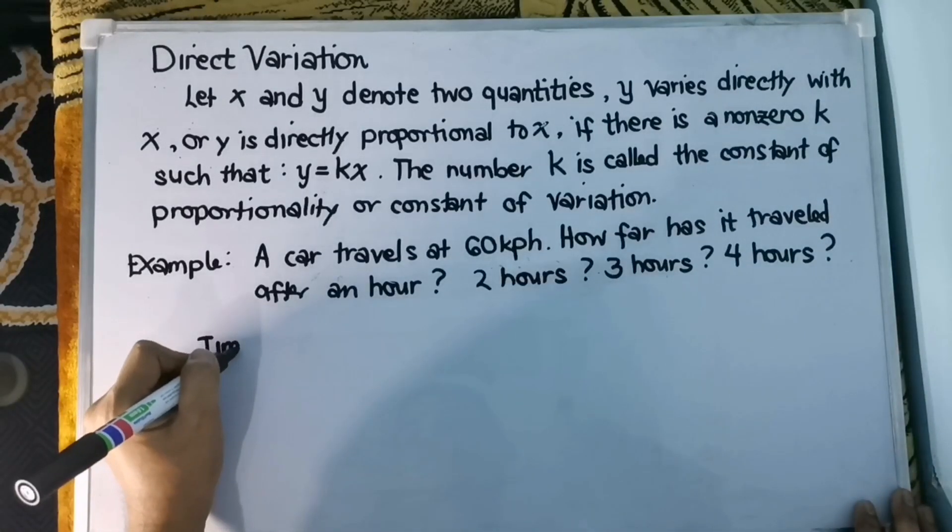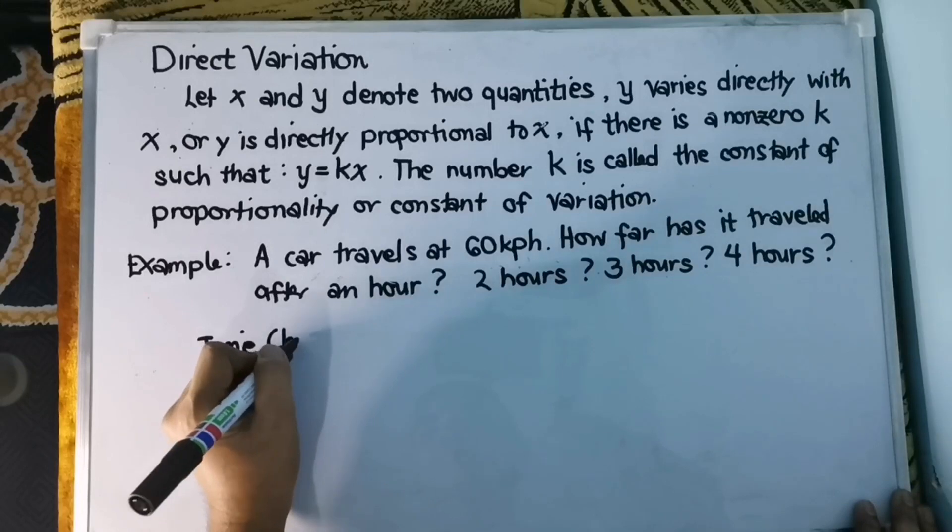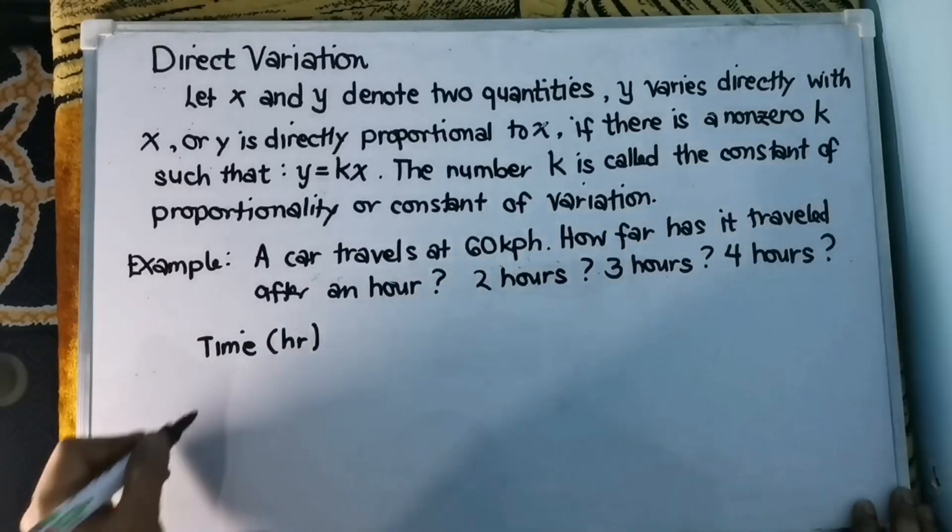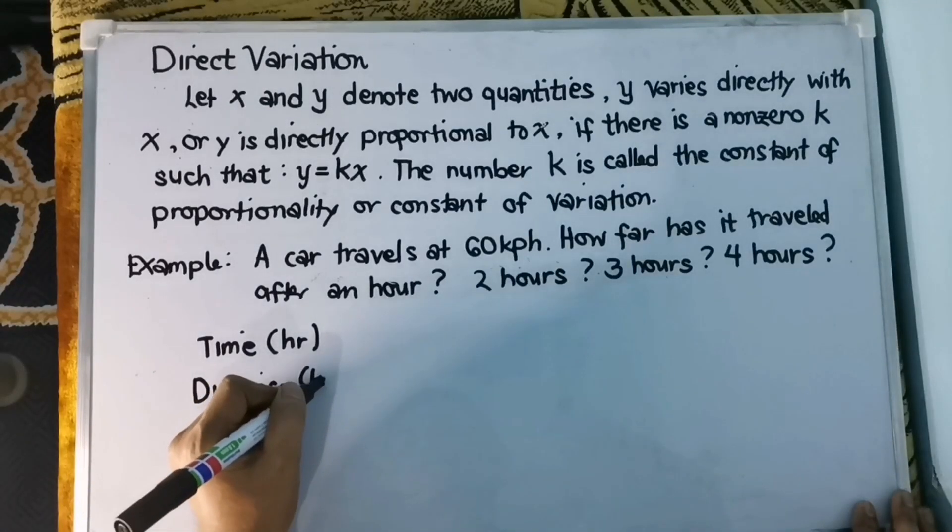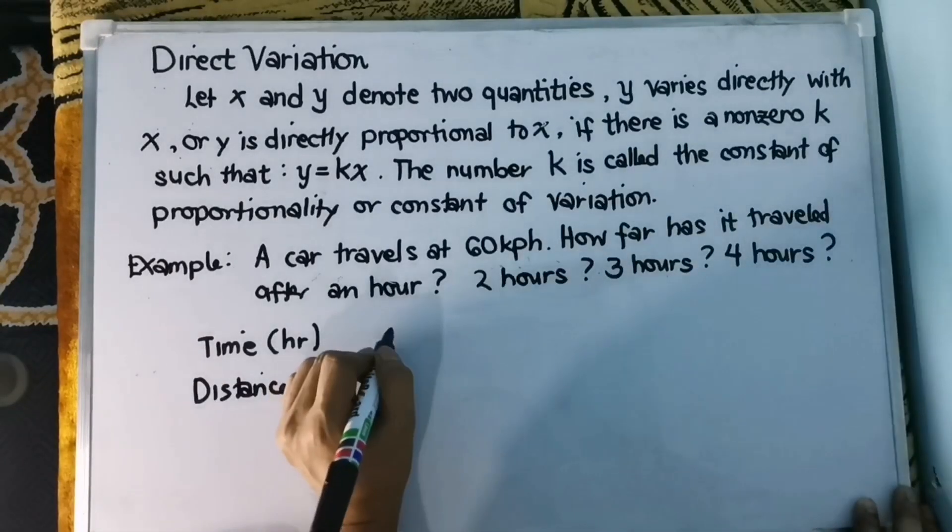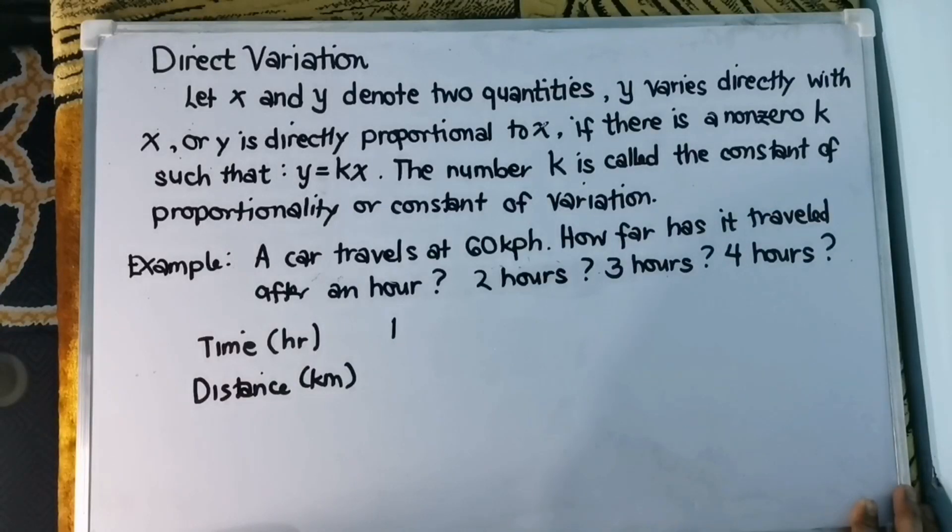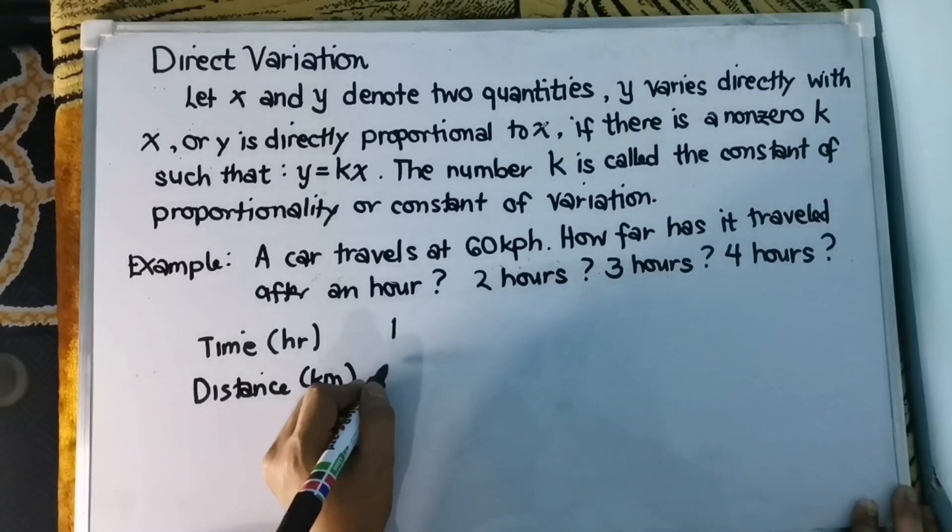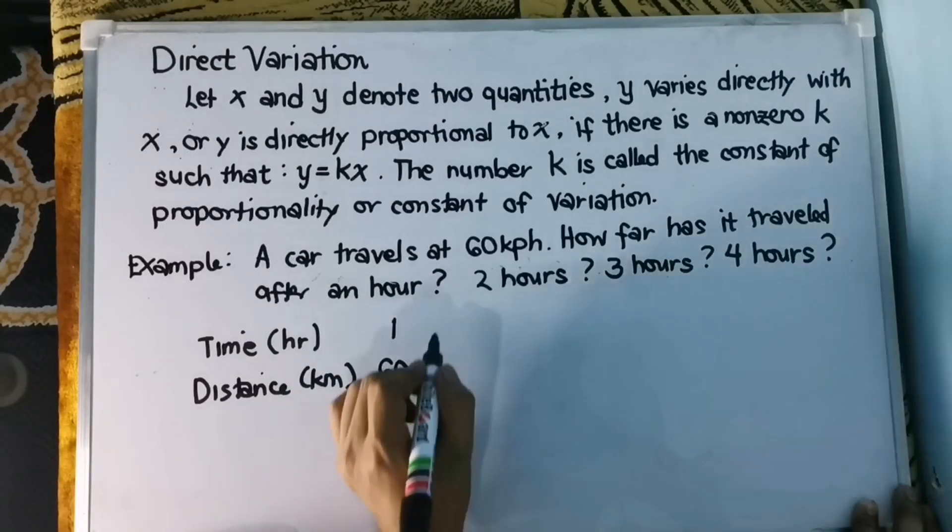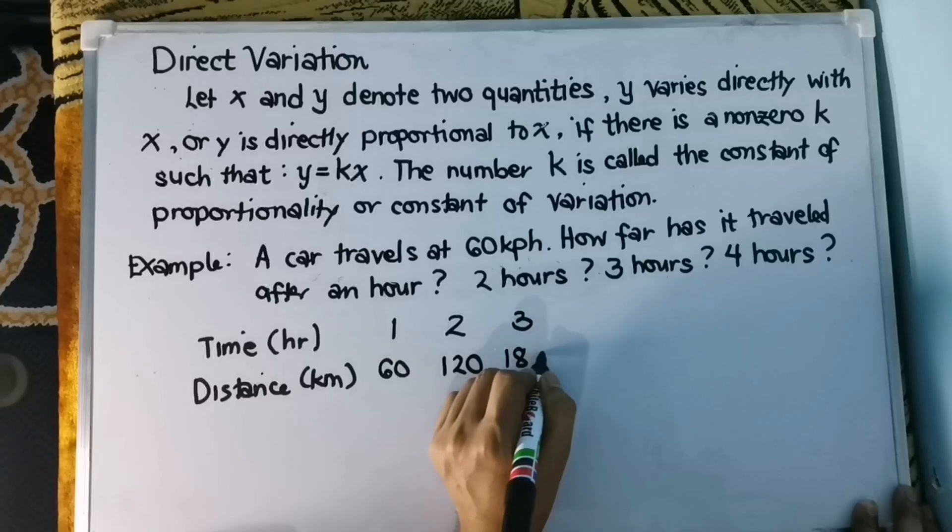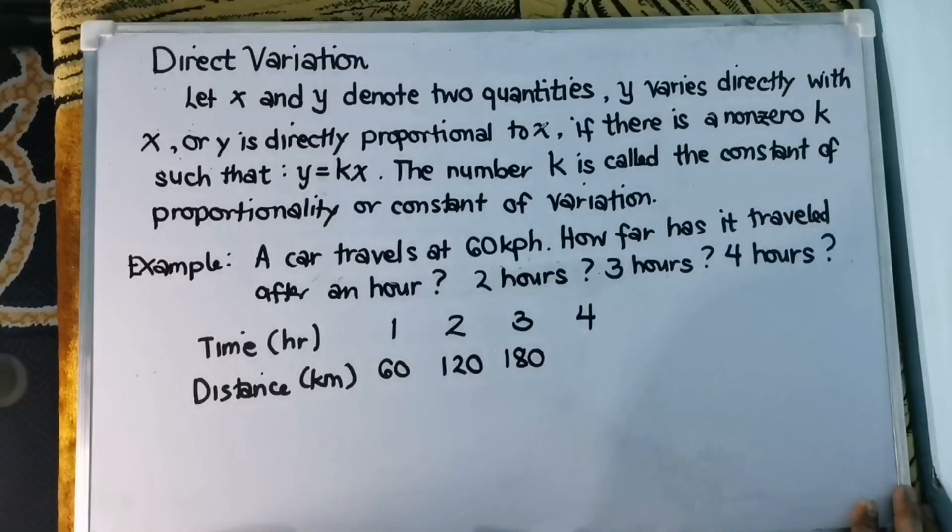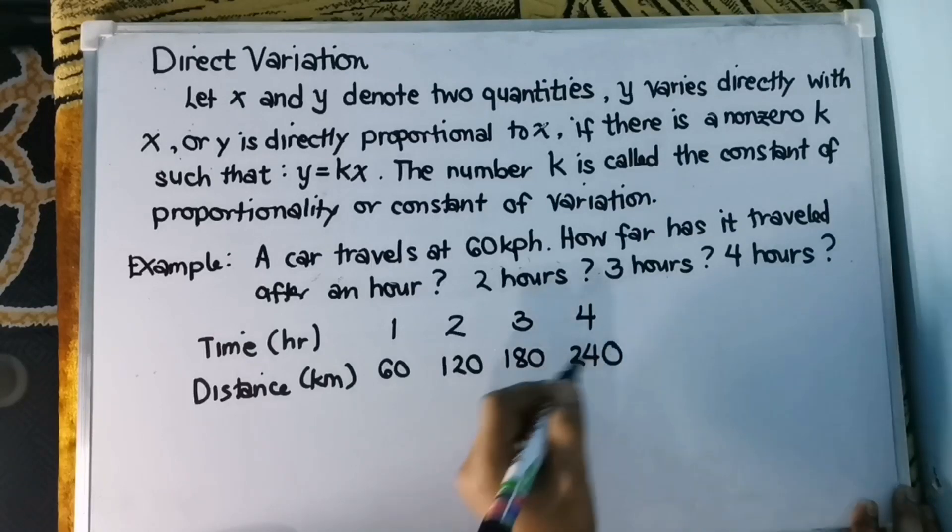We have here time. The unit is hour. And then this will be the distance covered in kilometers. We have here one hour, therefore the distance covered is 60 kilometers. If it is two hours, the distance covered is 120 kilometers. For three hours, we have 180 kilometers. And for four hours, we have 240 kilometers.